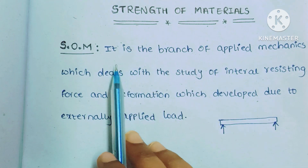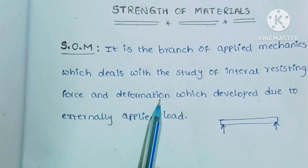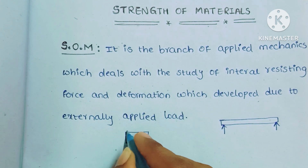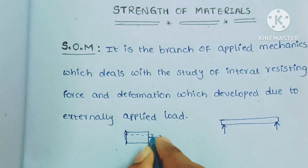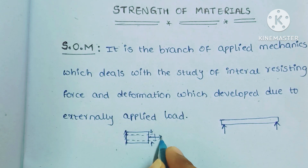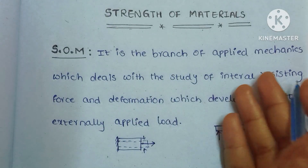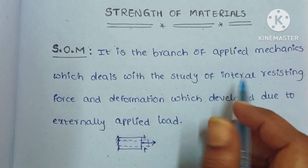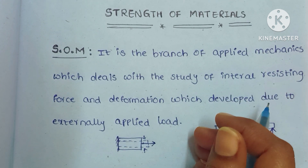The definition of strength of materials: it is the branch of applied mechanics which deals with the study of internal resisting force and deformation which is developed due to externally applied load. That means if you take one member, fix it, and apply some force on it, this body is going to deform. We calculate how much deformation occurs in this member when we apply an external load. Before starting strength of materials, I will give brief knowledge about applied mechanics — types of supports, types of beams, and how to draw a free body diagram.